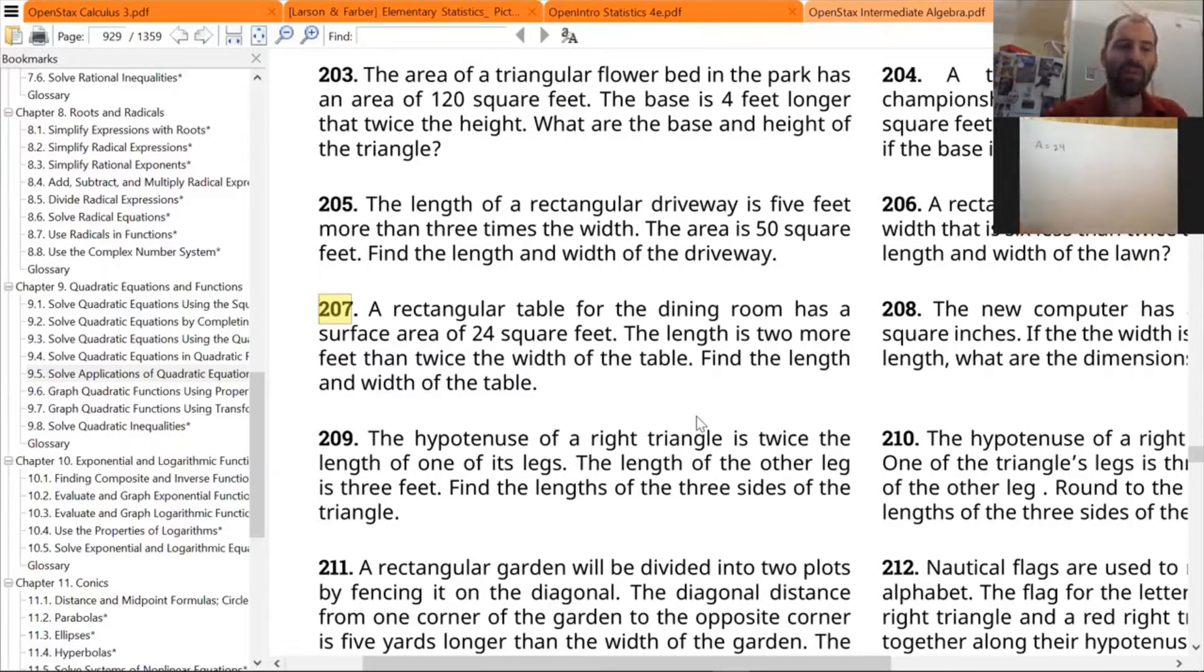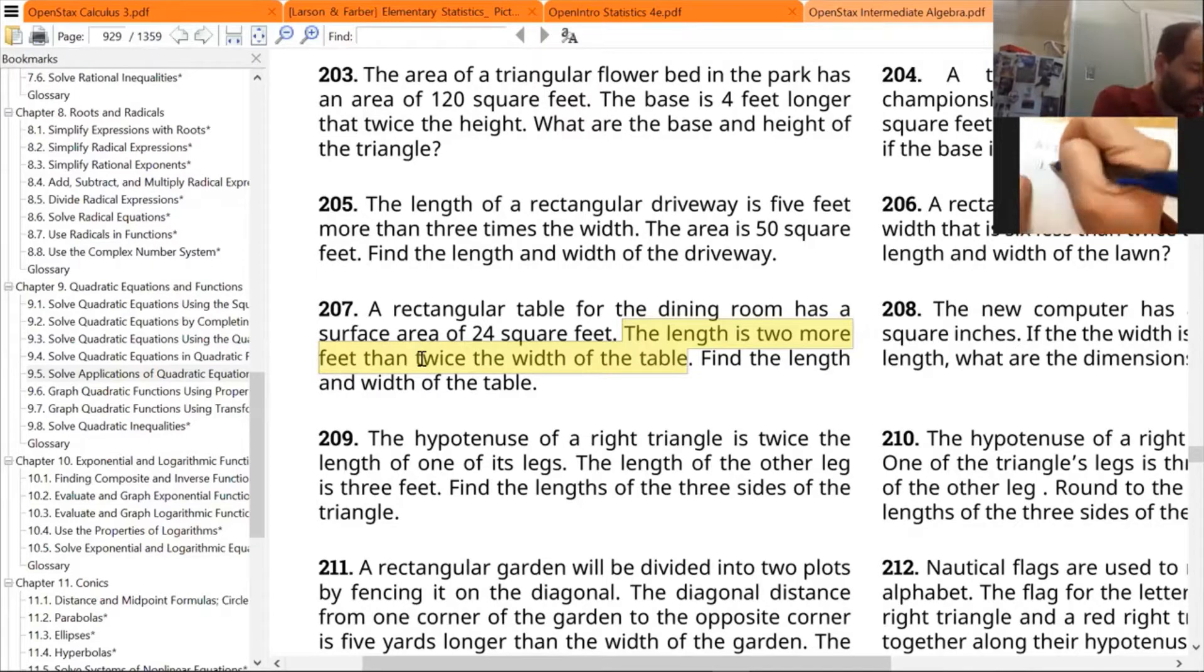Okay, so the two variables that we want to introduce in this problem are the ones they want us to solve for. That's usually what you want to do. So they want us to find length and width, so we're going to be looking at the variables L and W. Now, what does this sentence mean here? The length is two more feet than, so that means I'm going to add two. So the length is equal to two plus twice the width. Well, that means two times W.